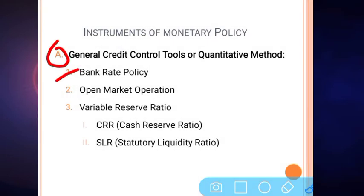Let's have a quick revision on the first tool — bank rate policy — that we discussed in the last session. The bank rate is the rate at which the RBI, that is the central bank, provides finance to other commercial banks. The commercial banks add a margin and then provide finance to retail investors.